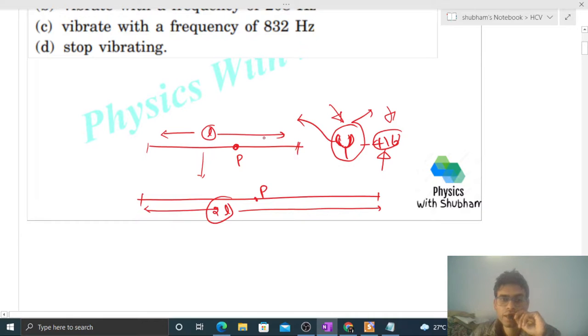This tuning fork has a prong, and whatever vibration this prong has, that same vibration will be transferred to point P. So that's why point P's frequency will be 416. So the waves produced in this wire will have the same frequency.